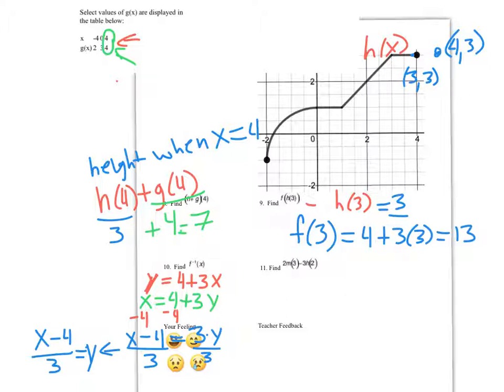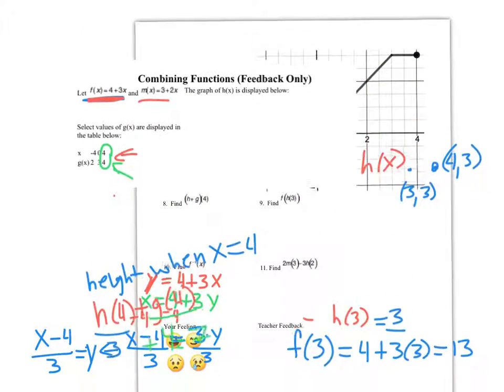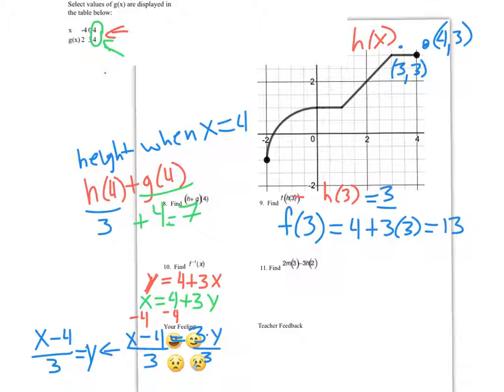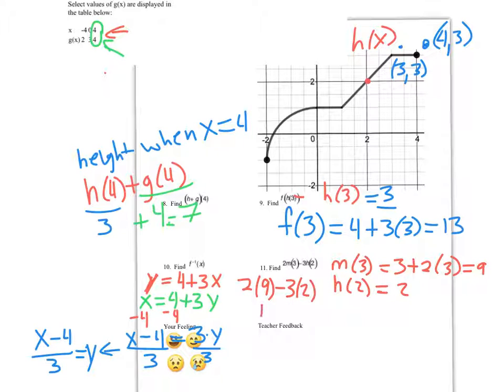Next up we've got 2m of 3 minus 3h of 2. Well, m is my other equation, so I've got to see what that is. That's 3 plus 2x. m of 3 is going to be 3 plus 2 times 3, which is 9. Then I've also got to find h of 2. I like finding these values first so I can build this equation all together. Going up here for the height of the graph when x equals 2, I get a value of 2. So 2 times 9 minus 3 times 2, it's going to be 18 minus 6, which is 12.